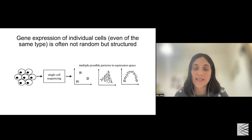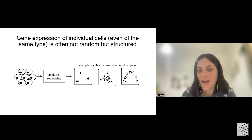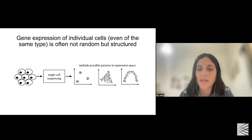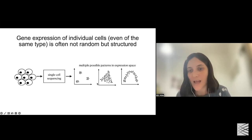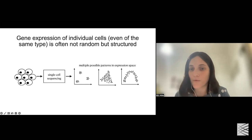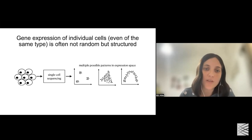If you think of single-cell gene expression data, we often see that cells form certain structures or patterns in gene expression space. Here in these plots, every point represents an individual cell in the high-dimensional gene expression space. We often see certain patterns — such as clusters, a trajectory, or even a continuum of expression for cells that are of the same type. But the origin of such patterns is usually unclear.